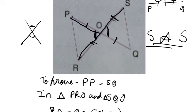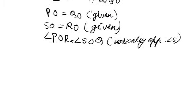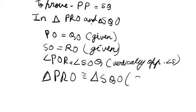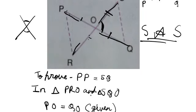So triangle PRO is congruent to triangle SQO by SAS. We now know that these two triangles are congruent.